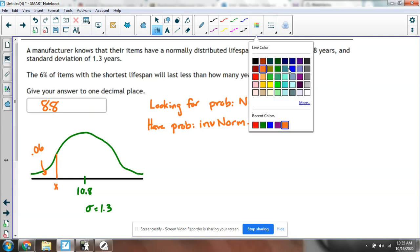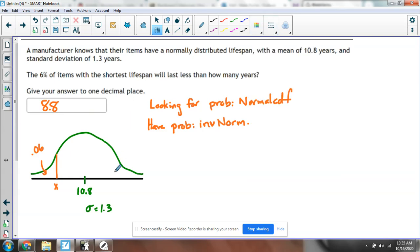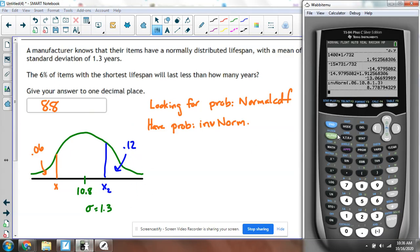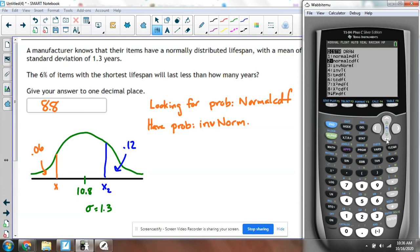What if I said, I want to know the value, we'll call this x2, that cuts off the top 12%, or 0.12. Well, the process is the exact same, except I told you a second ago that when you use the inverse normal, this area is always referring to area to the left.